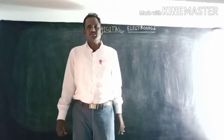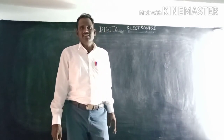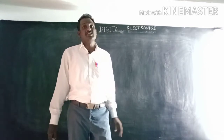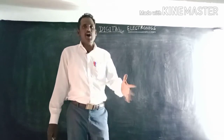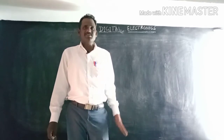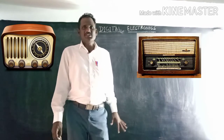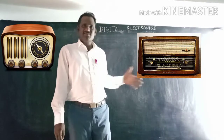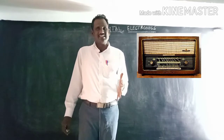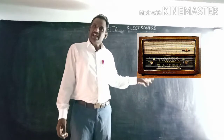In the earlier days we used analog electronics, which had a lot of disadvantages — especially the speed of operations. For example, the radio used by our grandfathers was analog in nature, made up of vacuum tubes.